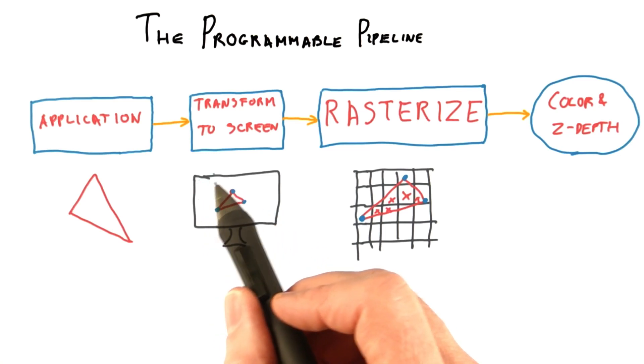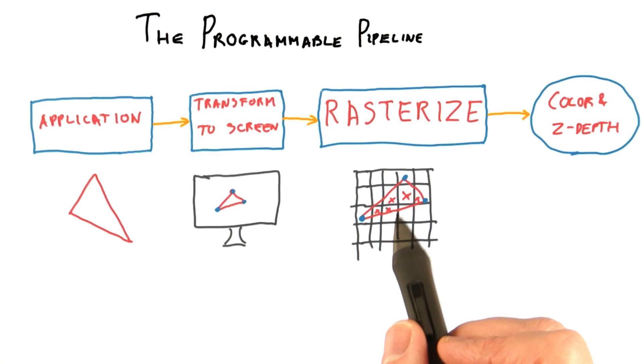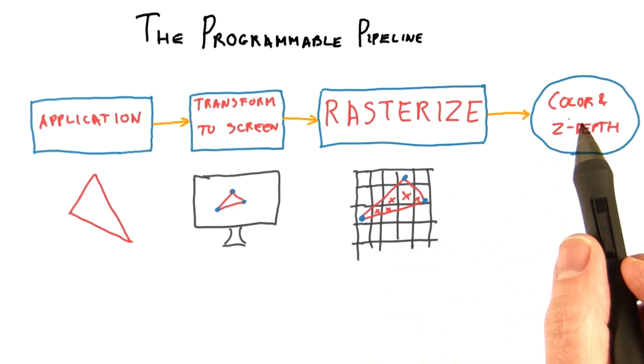Each pixel inside the triangle is shaded. If the pixel passes the z-buffer test, it is then saved to the image and displayed at the end of the frame.